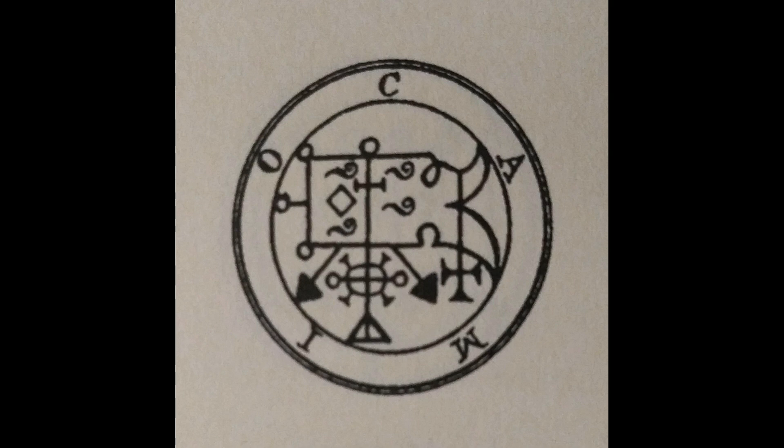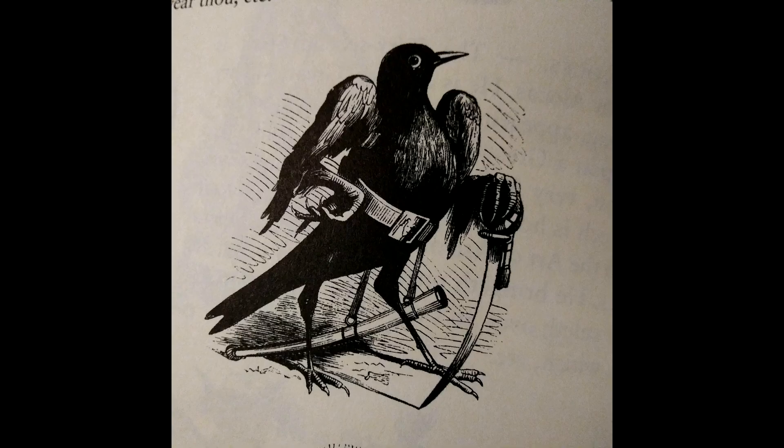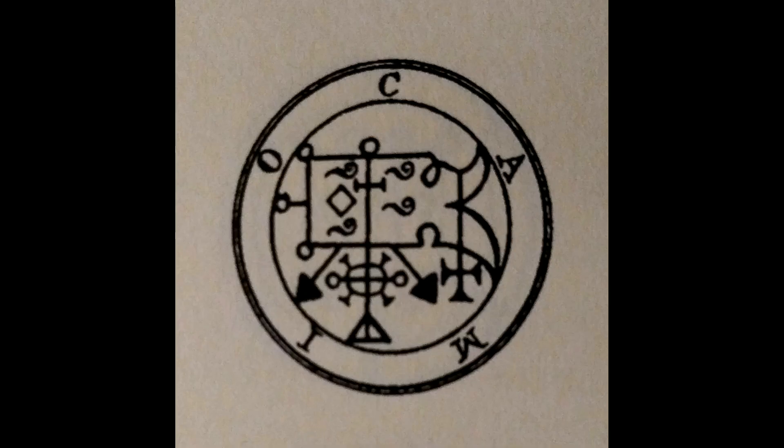He first appears in the form of a bird called a thrush, but afterwards he puts on the shape of a man carrying a sharp sword in his hand. He seems to answer in burning ashes or in coals of fire.